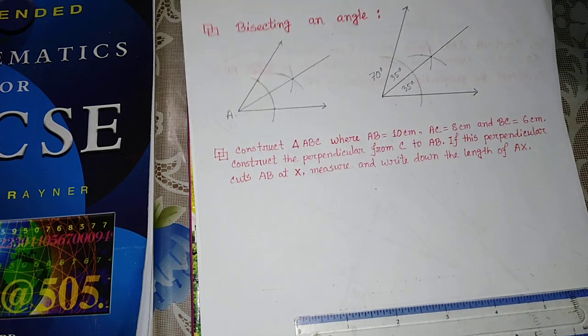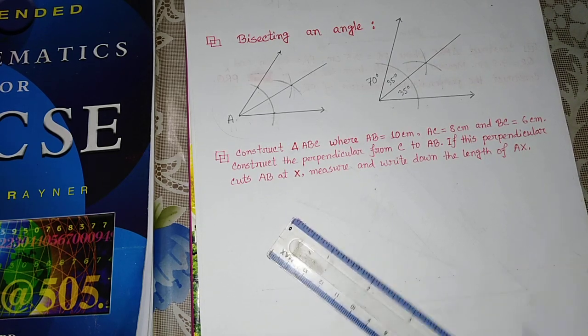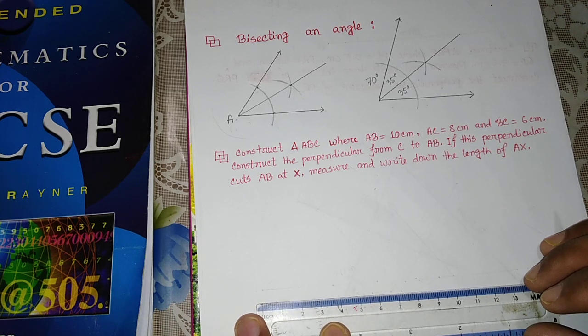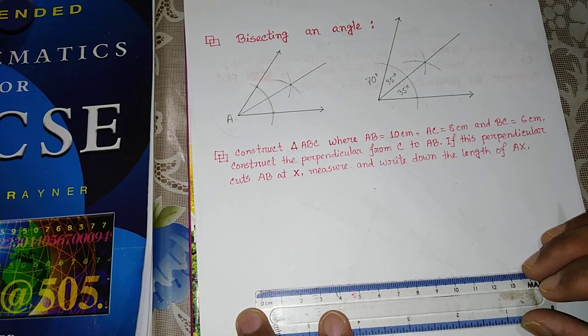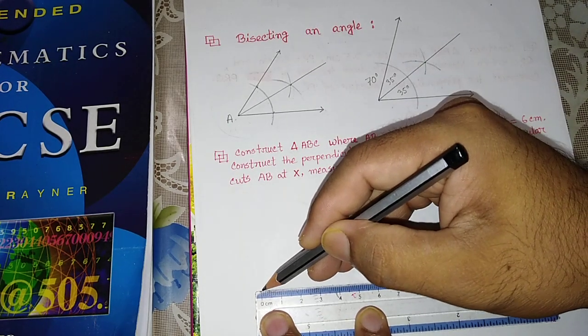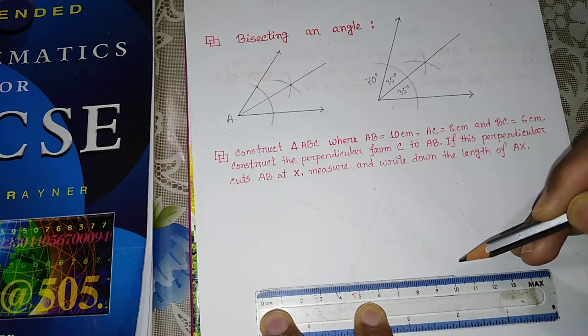We need to draw triangle ABC where AB equal to 10 cm. So we need to draw AB as 10 cm. Okay, fine.